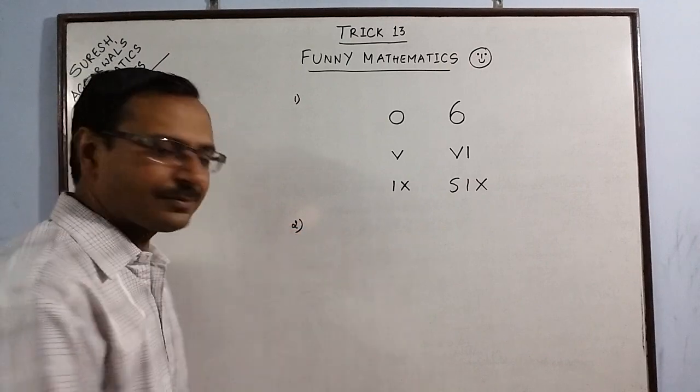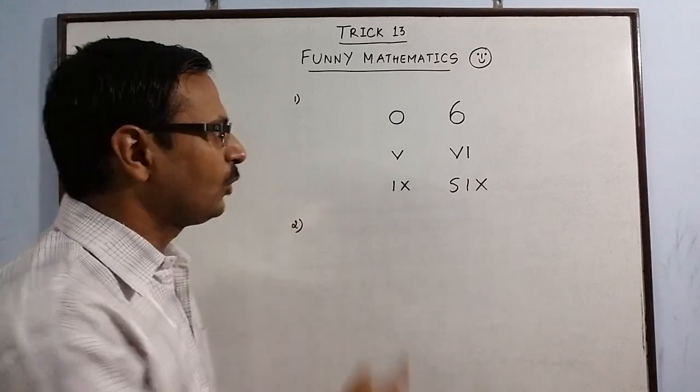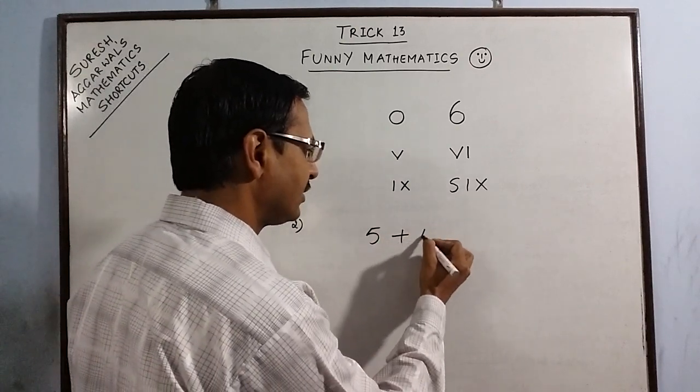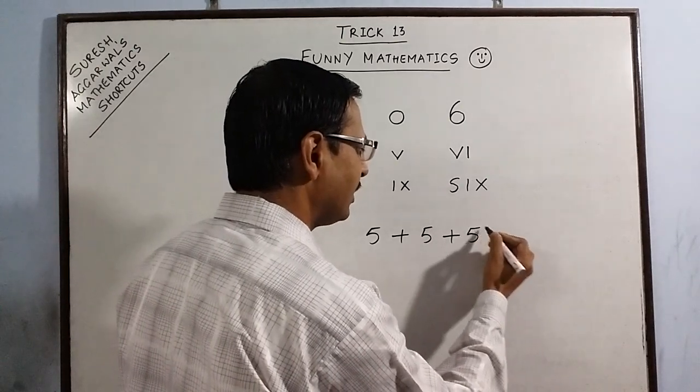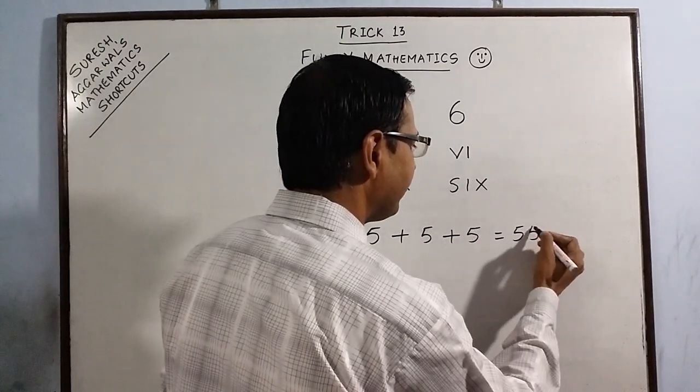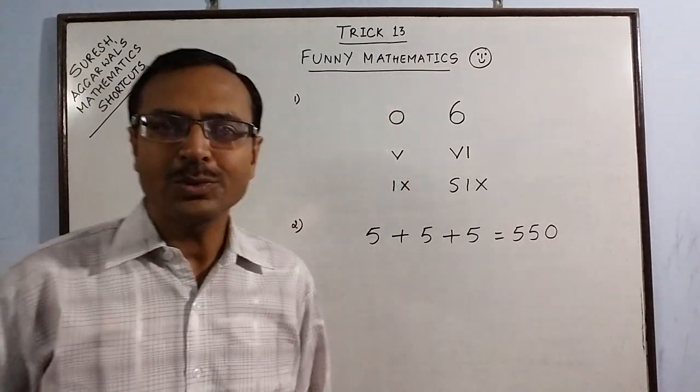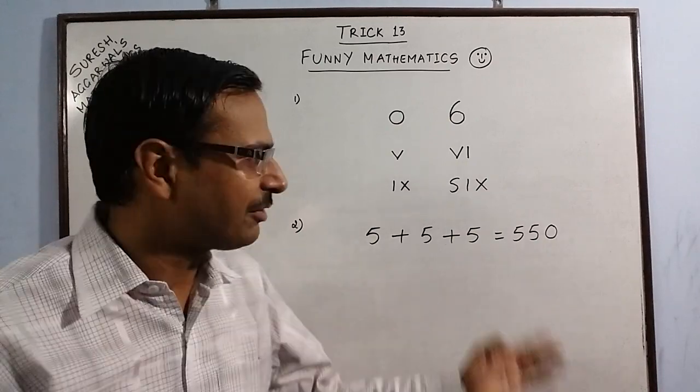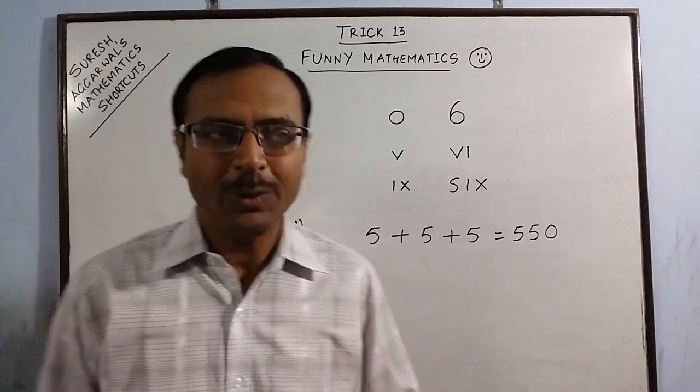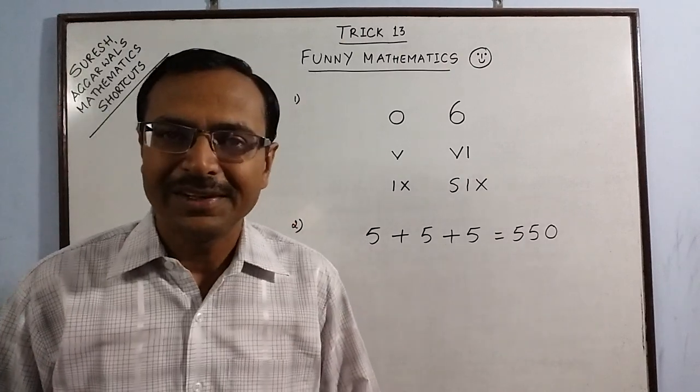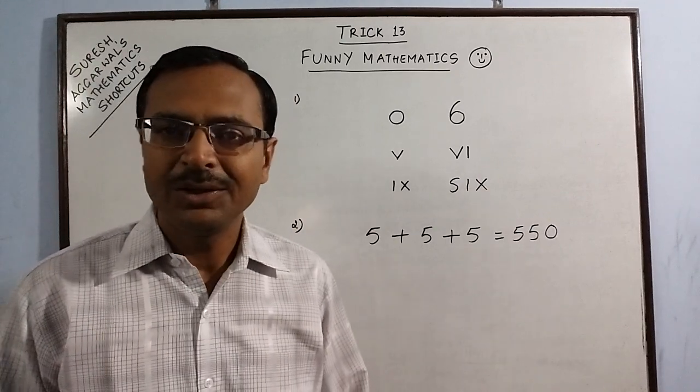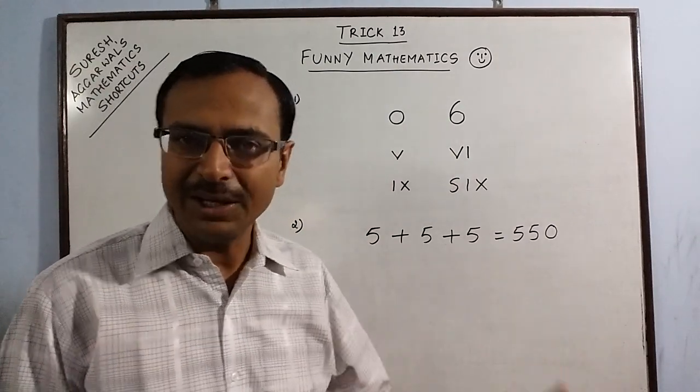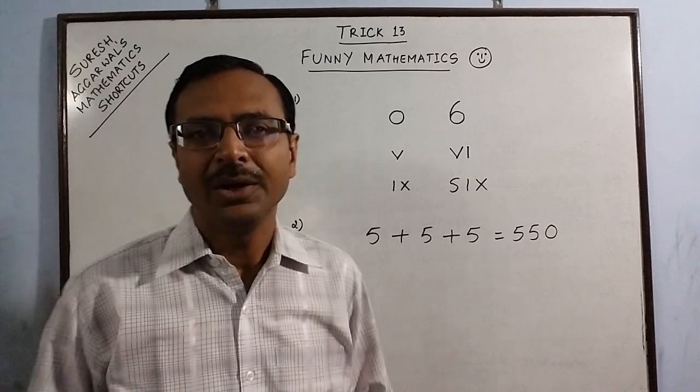Now coming to one more trick, again involving the use of a single straight line. Just write this equation on the board: 5+5+5=550. Every student of the class will tell you that this equation is wrong because 5+5+5 is ultimately 15, it is not 550. Now you have to tell the students that using only one line, you have to convert this into a real equation in which LHS and RHS are equal. Using just one line, no rubbing, nothing.